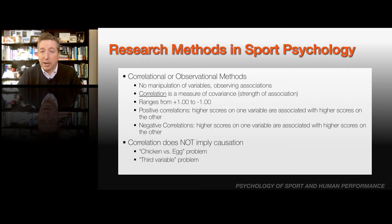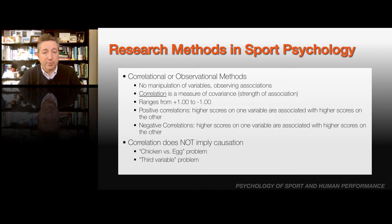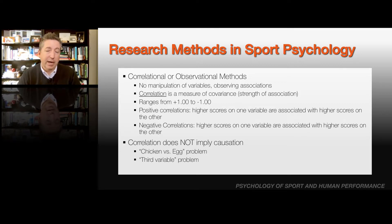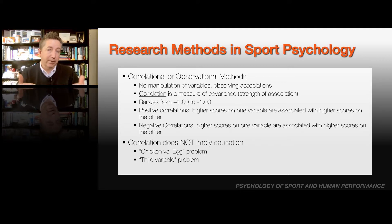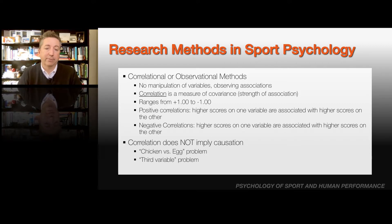Correlation ranges numerically from positive 1.0 to negative 1.0. Positive correlations mean that higher scores on one variable are associated with higher scores on the other variable. Negative correlations simply mean that a higher score on one variable is associated with lower scores on the other — as one goes up, the other goes down. If they both go up or down together, that's a positive correlation.